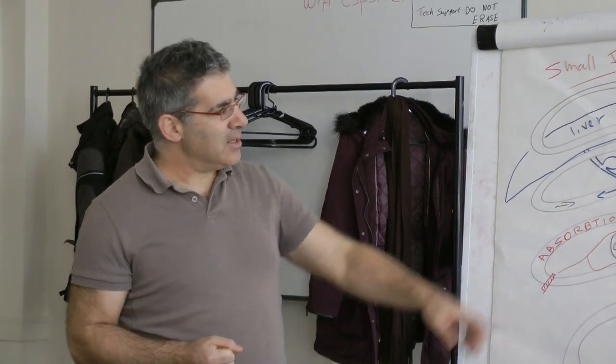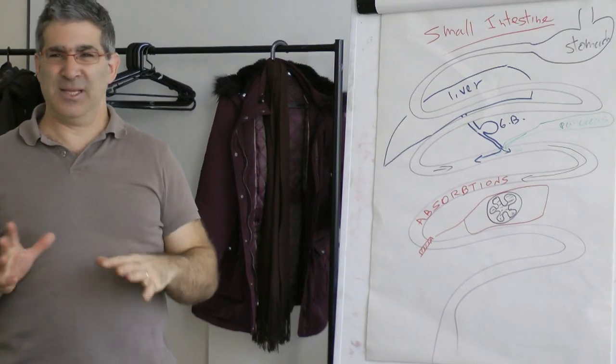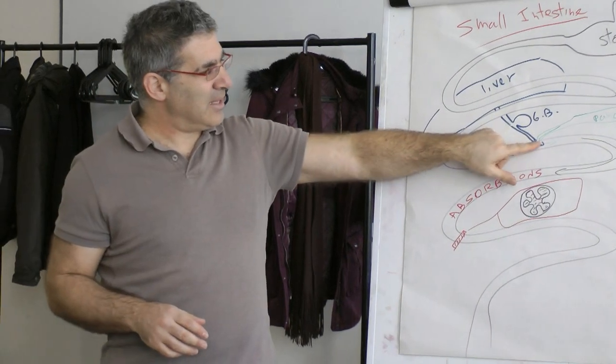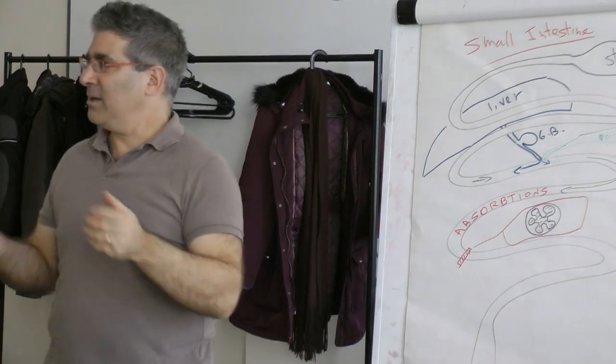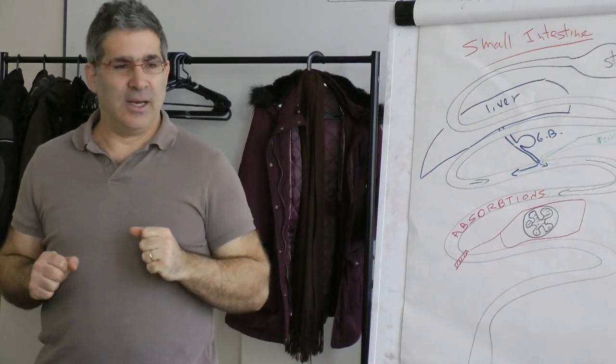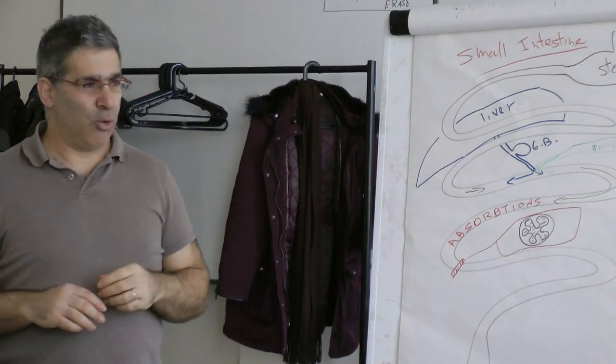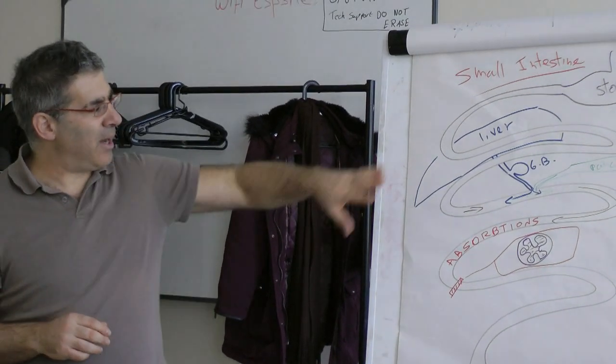The pancreas in this area brings different enzymes - there may be five or six different enzymes that the pancreas produces to break carbohydrates, proteins, and all of that.